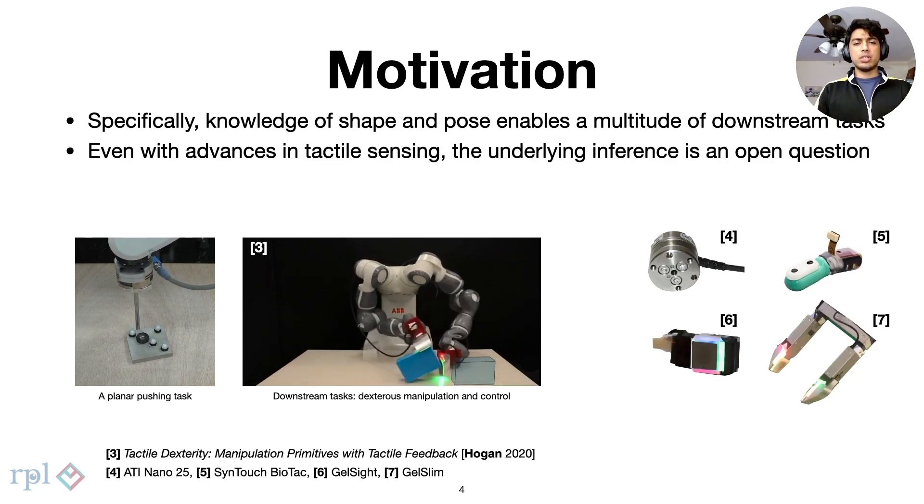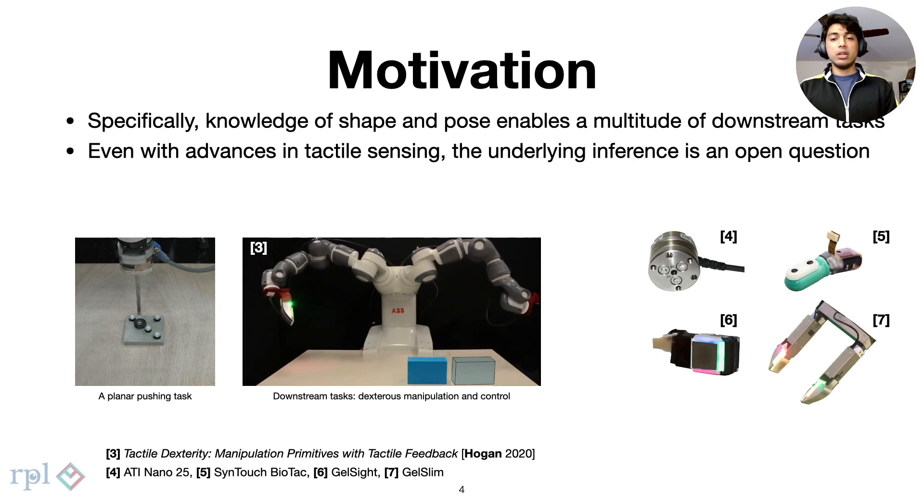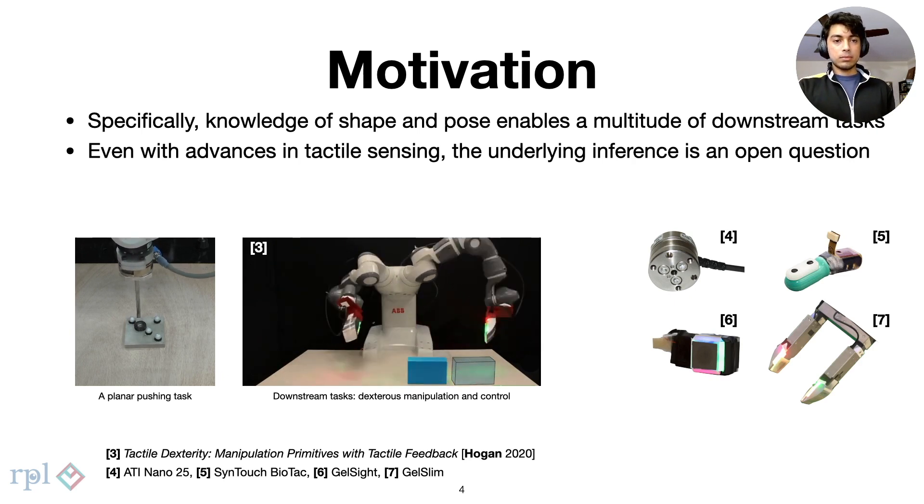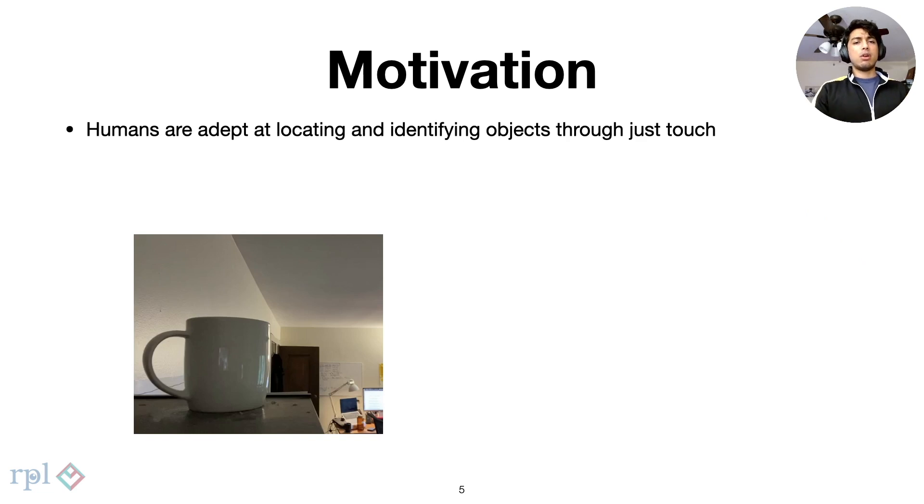Even with the progress in state-of-the-art touch sensing, the underlying inference is still an open question. Humans, however, are remarkably good at locating and inferring object properties with just the sense of touch.